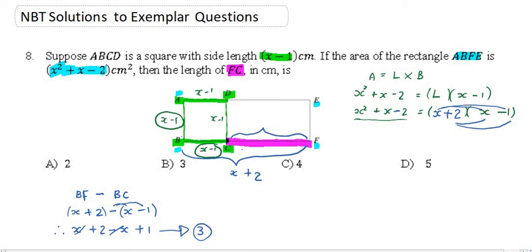So what is my final answer? FC is 3 centimeters. And do we have an answer of 3 centimeters? Yes. The answer is B.